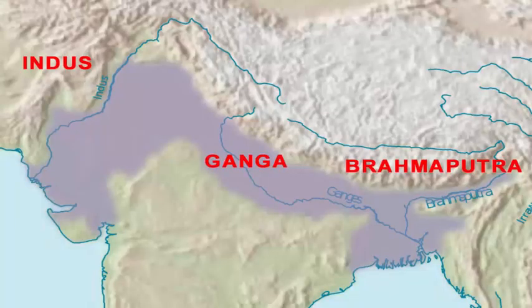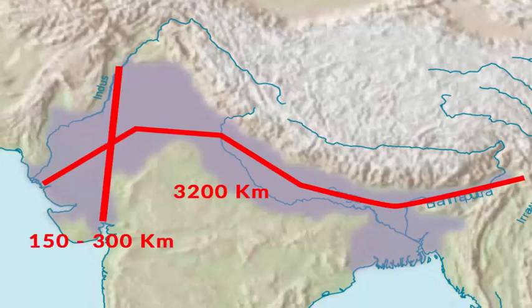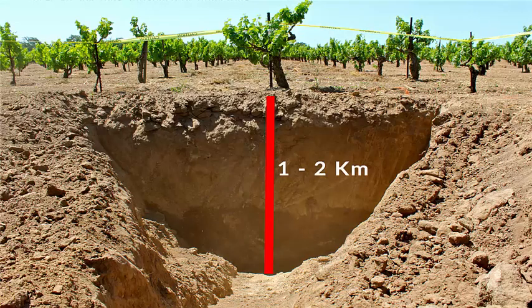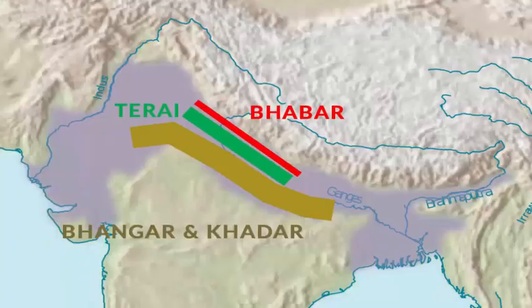The whole of northern plains are formed by the alluvial deposits brought by the rivers — the Indus, the Ganga and the Brahmaputra. These plains extend approximately 3200 km from east to west, and the width from north to south is 150 to 300 km. The depth of the alluvium deposits varies between 1000 to 2000 m, which is 1 to 2 km. From north to south, these can be divided into 3 major zones: the Bhabar, the Tarai and the alluvial plains.